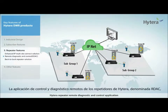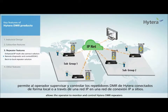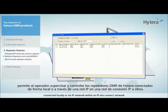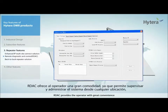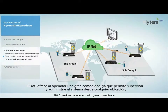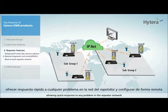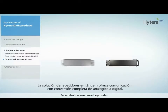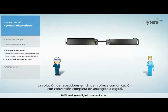Hytera Repeater Mode Diagnostic and Control application, namely RDAC, allows the operator to monitor and control Hytera DMR repeaters connected locally or via IP network within an IP site connect network. RDAC provides the operator with great convenience, such as monitoring and managing the system wherever you are, allowing quick response to any problem in the repeater network, and remote configuring equipment parameters in certain circumstances without going to the field.